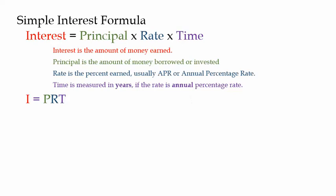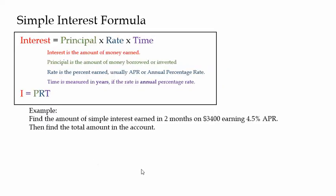Let's look at an example. Find the amount of simple interest earned in two months on $3,400, which is earning a 4.5% APR — that's your annual percentage rate — and then find the total amount that is in the account after that time. It's pretty straightforward: you just identify what each variable is and then plug in the values. Interest equals principal times rate times time.